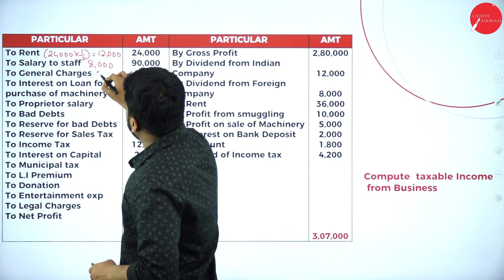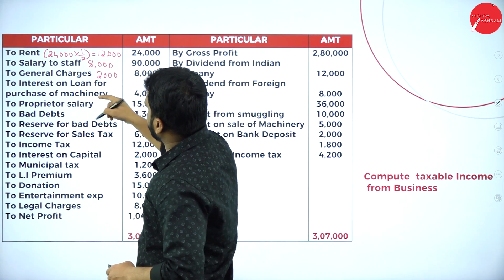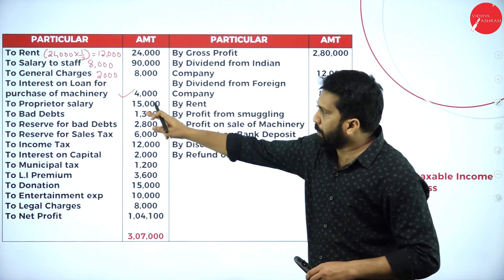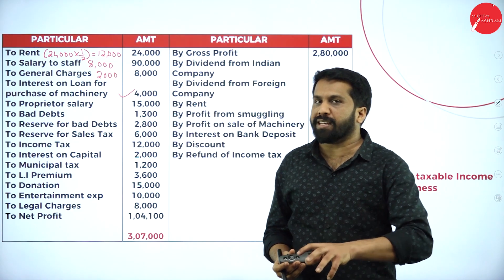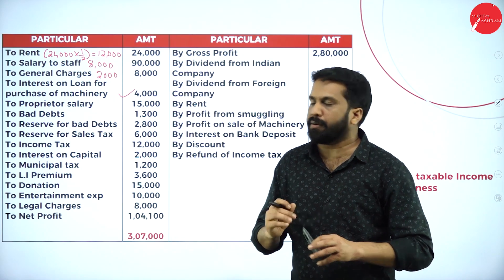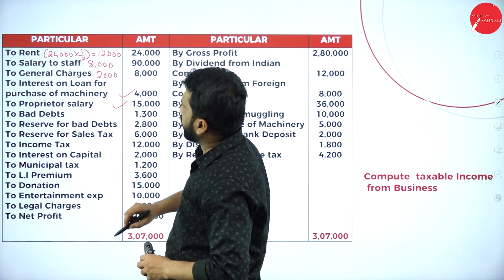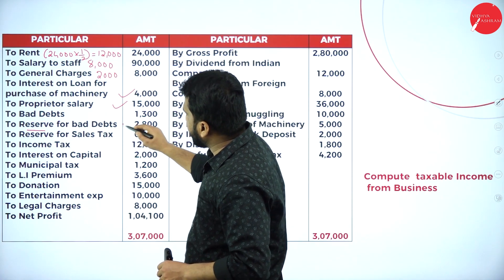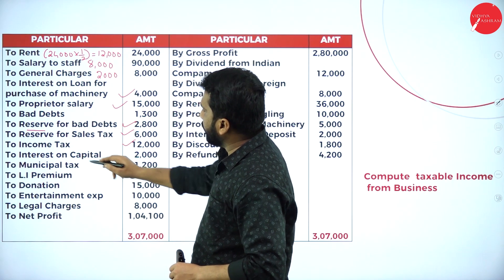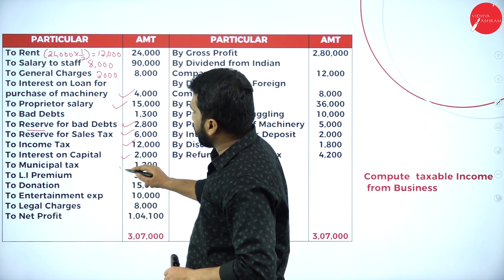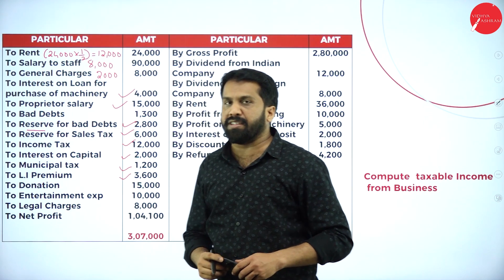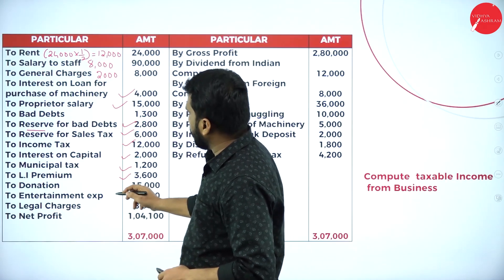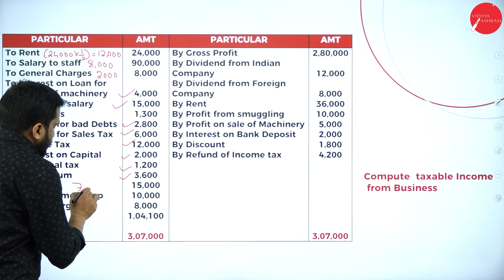Interest on loan for purchase of machinery — since the loan is for capital purposes (machinery), it is not part of business expenses. Proprietor salary is to be taken. Bad debts reserve: all reserves and all provisions will come. Other items: another reserve, income tax, interest on capital, municipal tax, LIP, and donation — out of ₹15,000 donation, ₹8,000 is for trade association, so we take the balance ₹7,000.